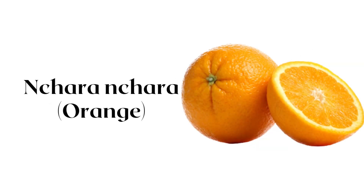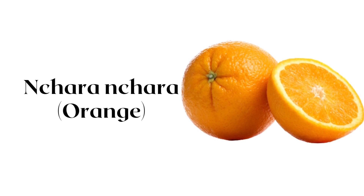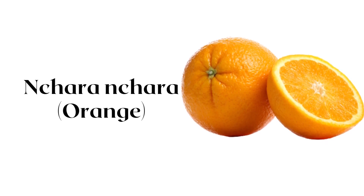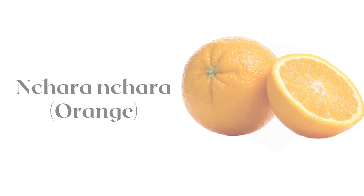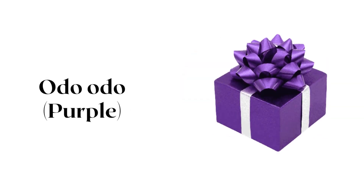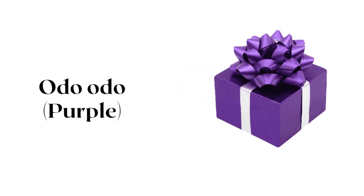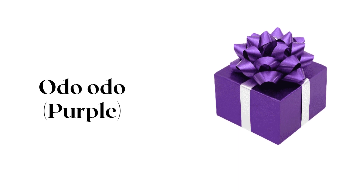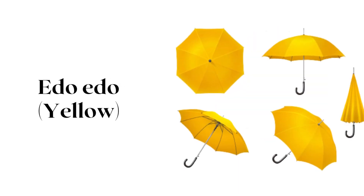Orange is Tarantara. Purple is Old. And yellow is a door.